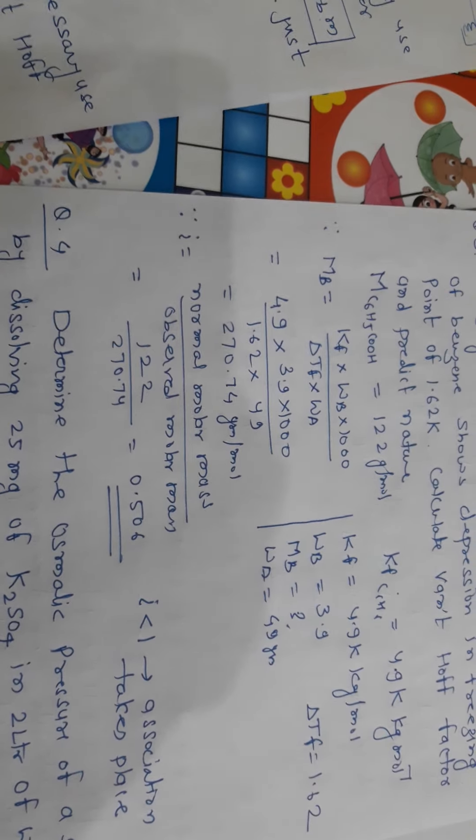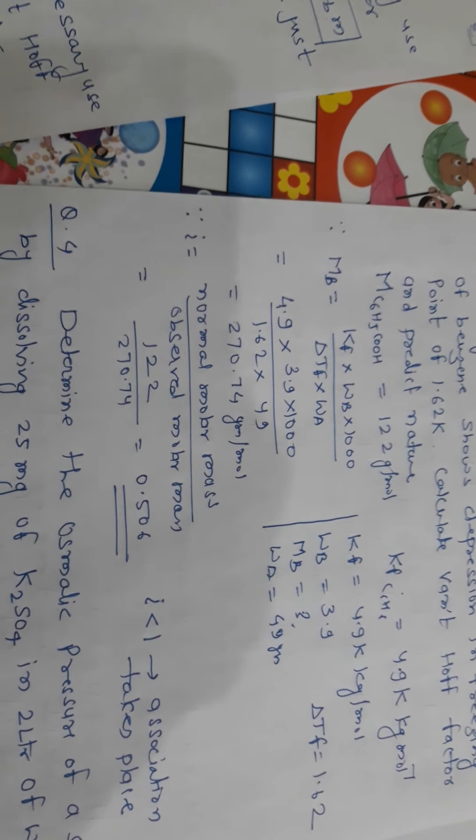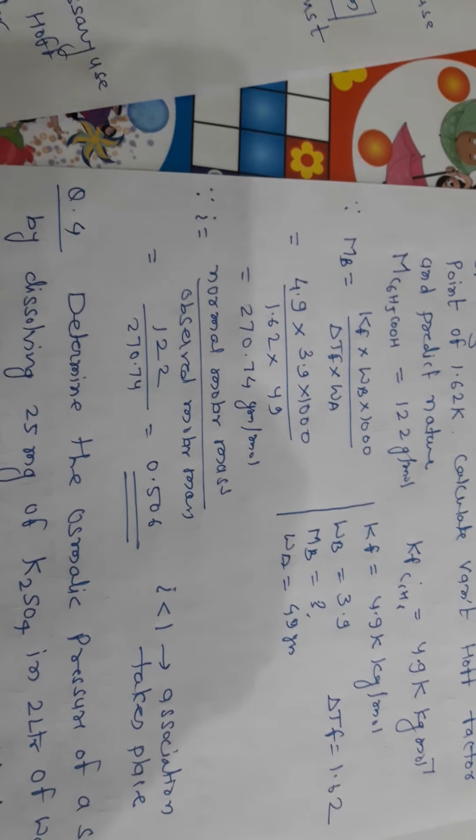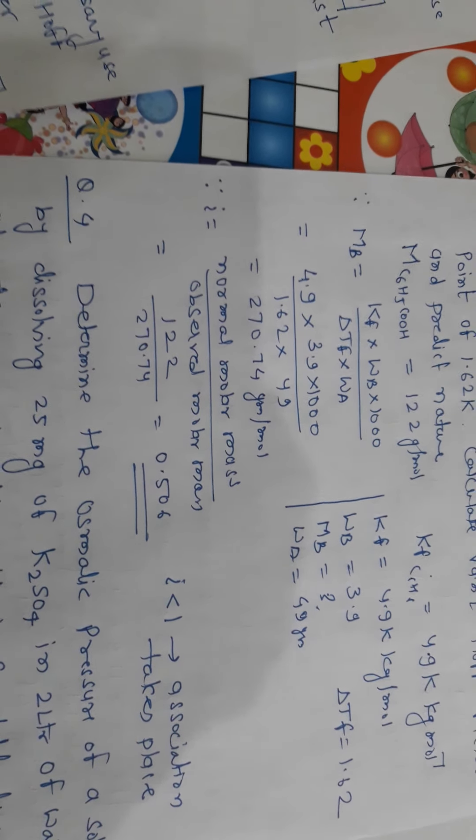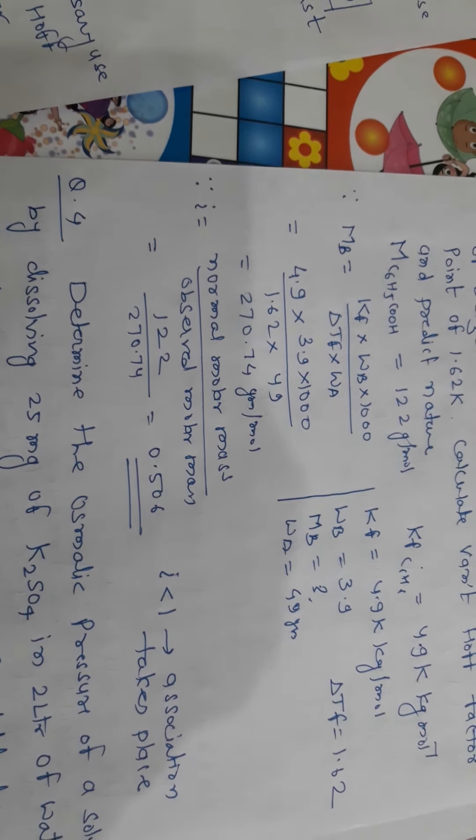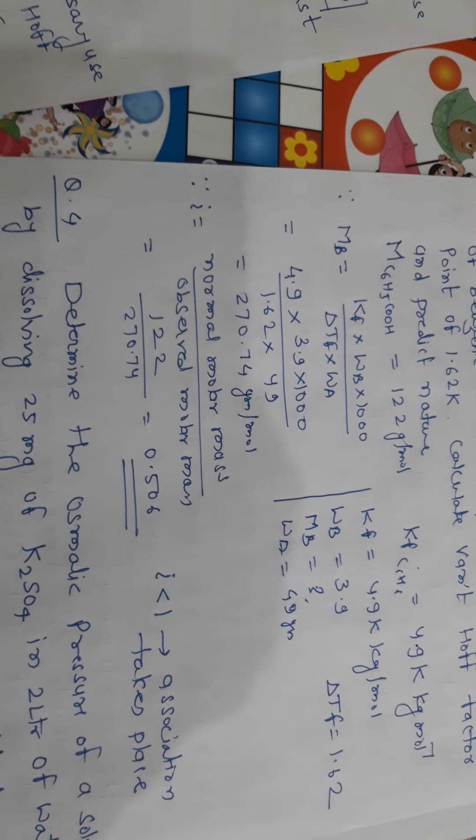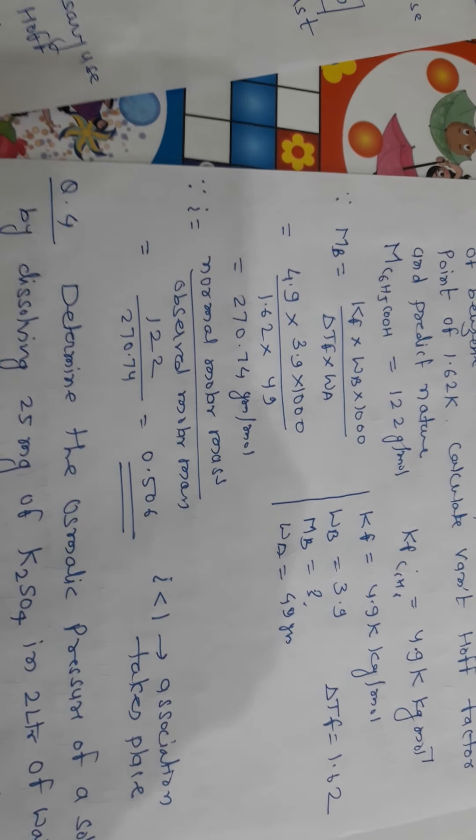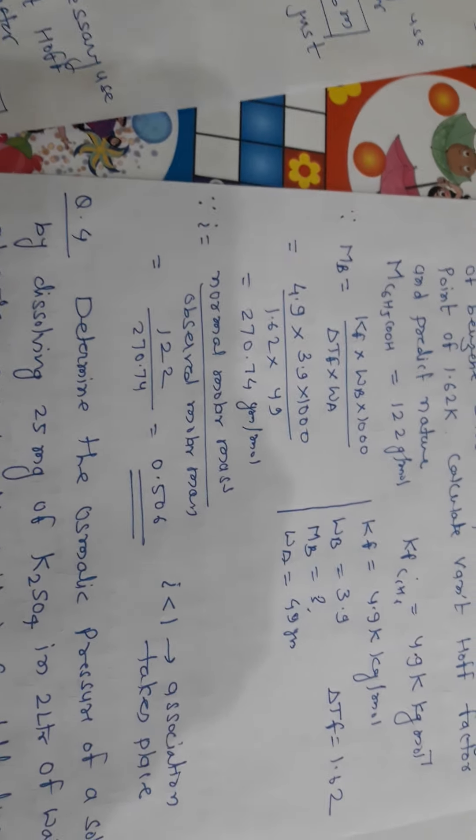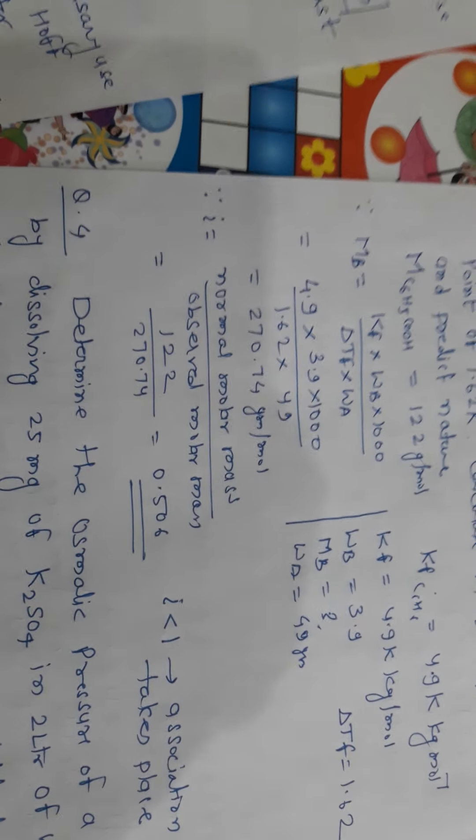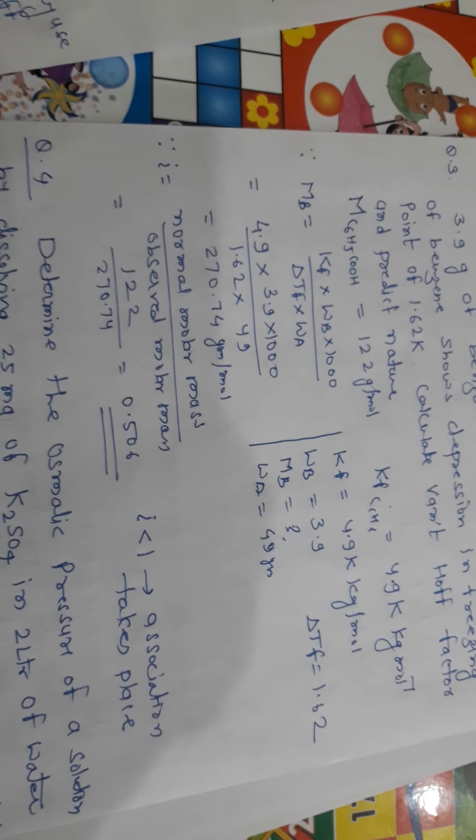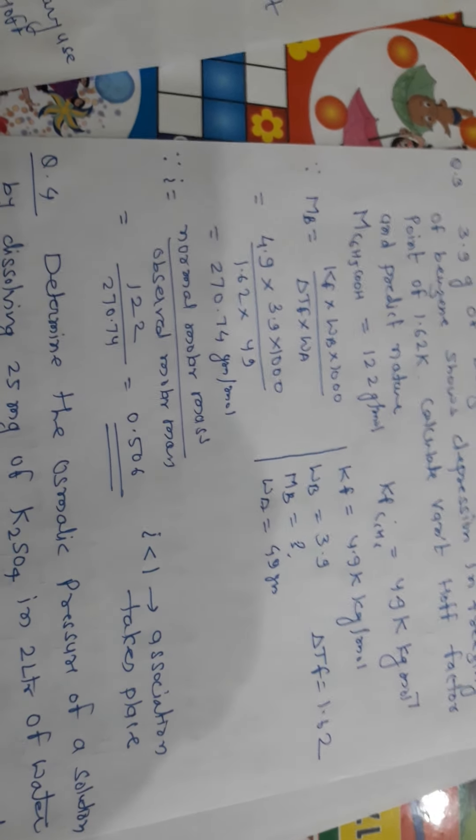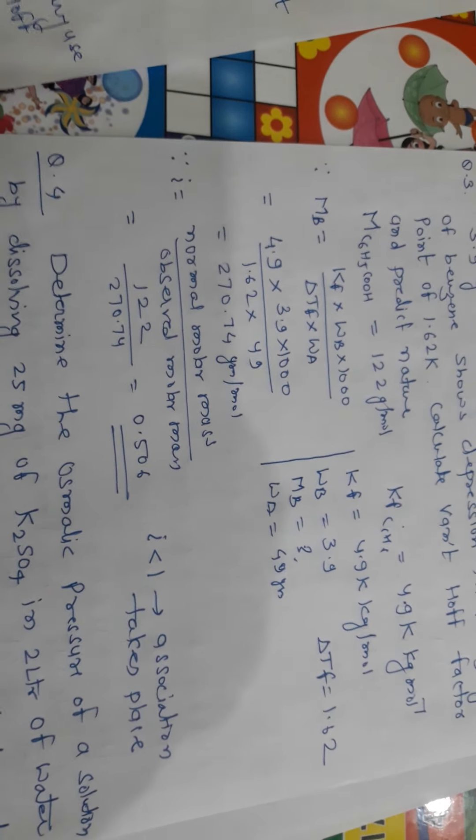Since I is equal to normal molecular mass upon observed molecular mass. Normal, it is 122. Observed, it is 270.74. When we divide 122 by 270.74, it will be 0.506. Since value of I is less than 1, hence association is taking place. The nature can be association. If I becomes greater than 1, then it is dissociation.